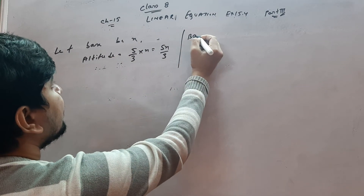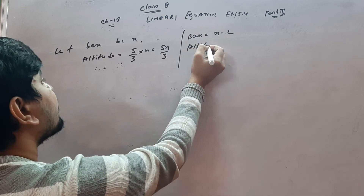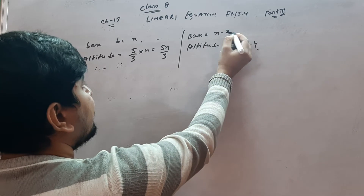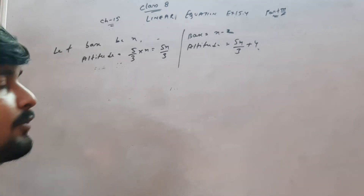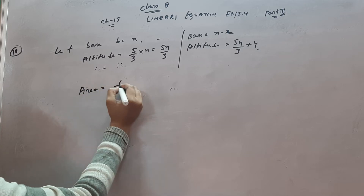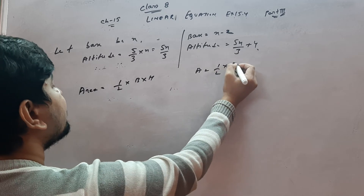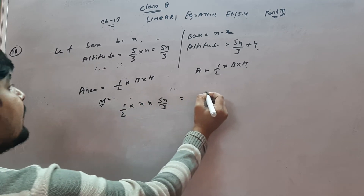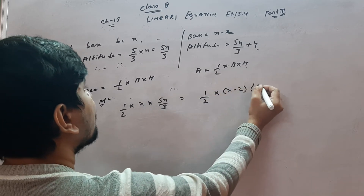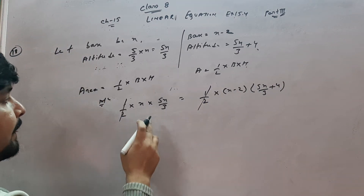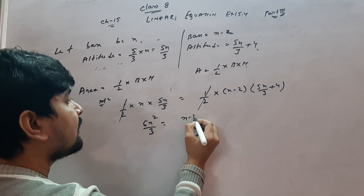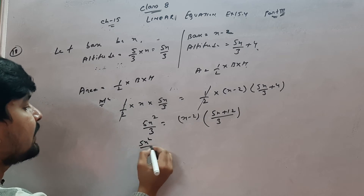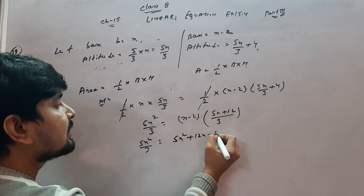The second base is decreased by 2 and altitude is increased by 4, so new altitude = 5x/3 + 4 and new base = x minus 2. In both cases, the area of the triangle is the same. Area of triangle = half × base × height. So: half × x × (5x/3) = half × (x minus 2) × (5x/3 + 4). This gives 5x²/3 = (5x + 12)(x minus 2)/3.